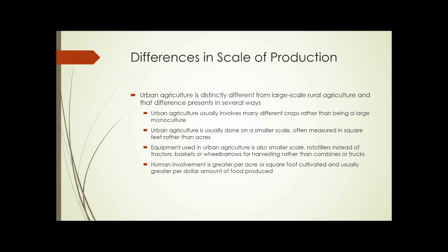Next, urban agriculture is usually done on a smaller scale — you don't find 1,000-acre urban agricultural operations typically. So the scale is often measured in square feet rather than in acres. The equipment used is also smaller scale; you may see rototillers instead of big tractors, and baskets or wheelbarrows for harvesting rather than combines or trucks. Finally, human involvement is greater per acre or square foot under cultivation, and usually greater per dollar amount of food produced than on a typical farm.